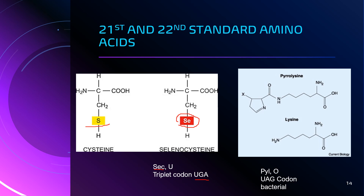The 22nd amino acid, described by some researchers in 2002, is pyrrolysine. However, it has not yet been universally accepted as the 22nd amino acid. Pyrrolysine's three-letter code is PYL and the single-letter code is capital O. It is coded by the triplet codon UAG, is similar to lysine — which is why it is named pyrrolysine — and is present in some bacterial proteins.